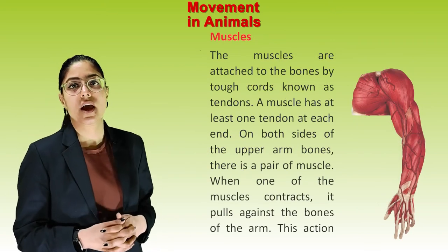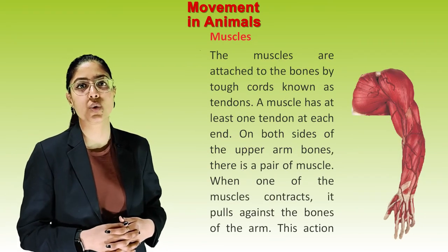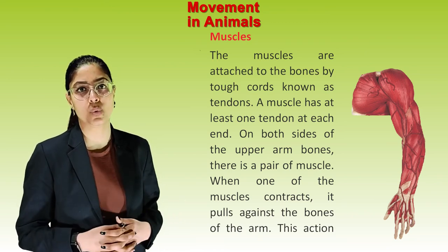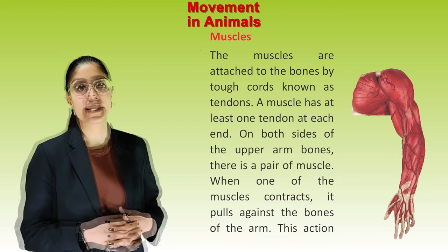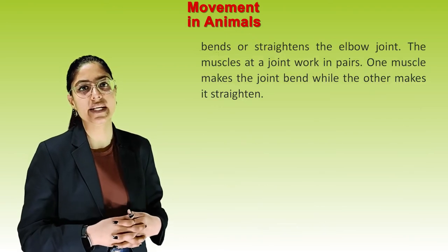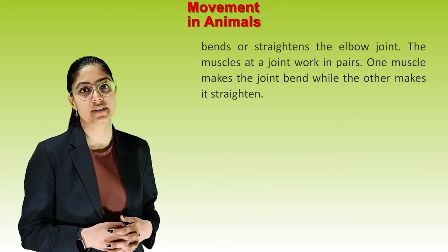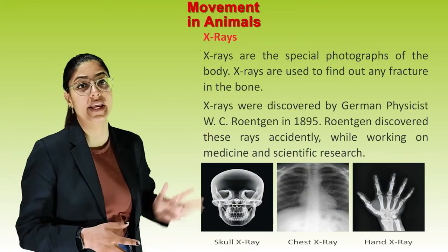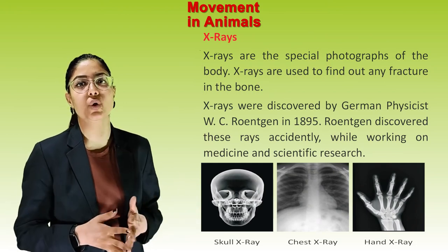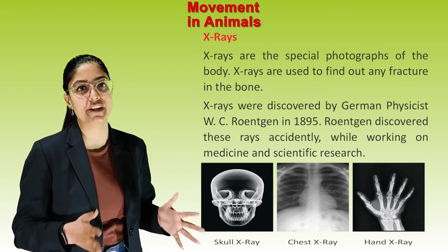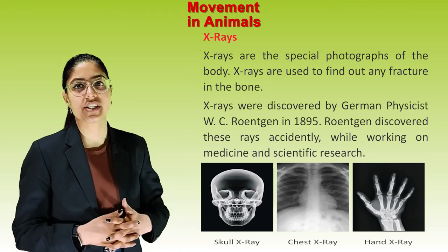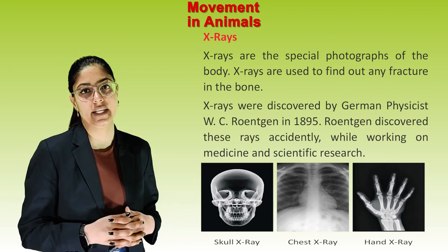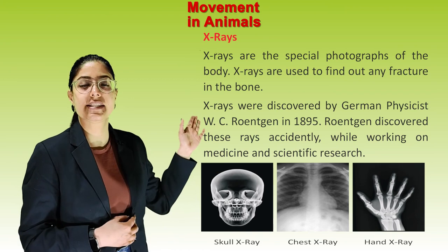Muscles. Muscles are attached to bones by tough cords known as tendons. Our muscles have at least one tendon at each end. On both sides of the upper arm bone there is a pair of muscles. When one muscle contracts, it pulls against the bones of the arm, bending or straightening the elbow joint. The muscles at a joint work in pairs — one makes the joint bend while the other makes it straighten. X-rays are special photographs of the body used to find out any fractures in bones. X-rays were discovered by German physicist W.C. Röntgen in 1895, accidentally while working on scientific research.